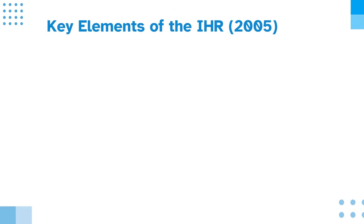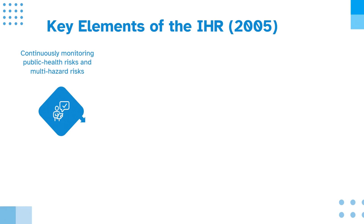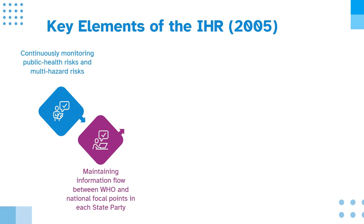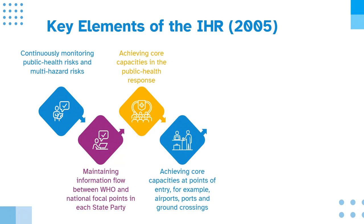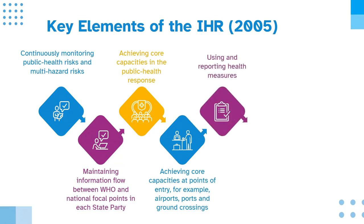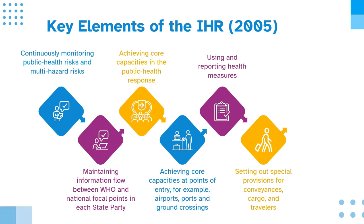Key elements of the IHR 2005 are: continuously monitoring public health risks and multi-hazard risks; maintaining information flow between WHO and national focal points in each state party; achieving core capacities in the public health response; achieving core capacities at points of entry, for example airports, ports and ground crossings; using and reporting health measures; setting out special provisions for conveyances, cargo and travellers; and protecting human rights.